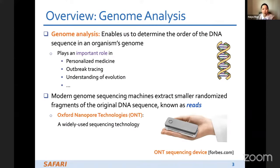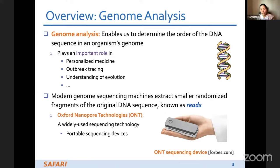ONT is a widely used sequencing technology and it provides portable sequencing devices — as you can see on the right side, it's just palm-sized. It has high throughput and is also very cheap.